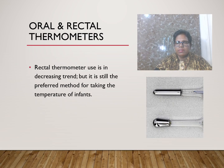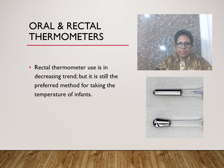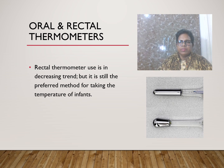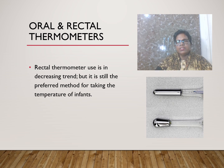Here you can see the difference between oral and rectal thermometers. The oral thermometer's bulb is a little longer, while the rectal thermometer's bulb is rounded. Rectal thermometers are used less frequently now, but remain the preferred method for taking the temperature of infants.